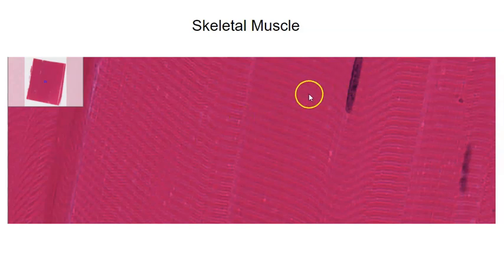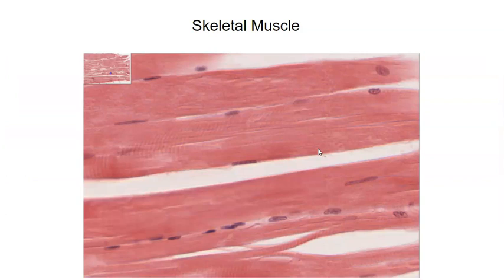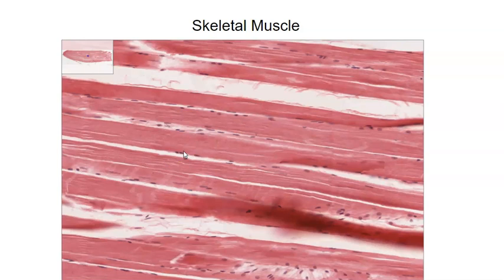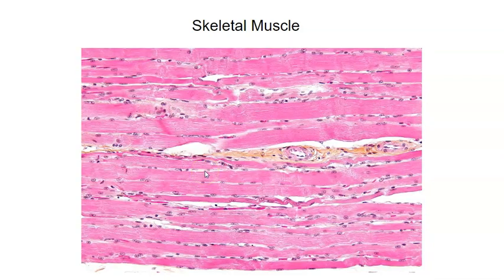Zoomed in, you can see a nucleus on the perimeter and striations clearly visible. In a larger sample, nuclei are located on the perimeter of the fibers. Striations are evident on some fibers but not always visible on all of them in every preparation. In another sample more similar to what you'd see in the lab, striations are present but not equally evident on all cells.